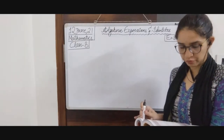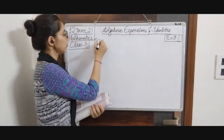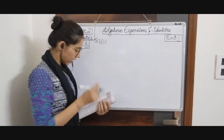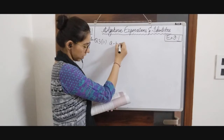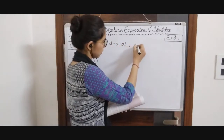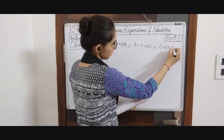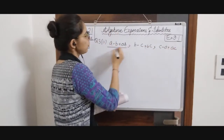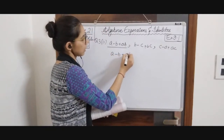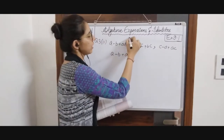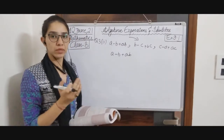We will be starting with part 2 of question number 3. We have to add the following expressions — the 1st, 2nd, and 3rd. We will write the first expression, then move on to the next expression and put like terms below like terms.